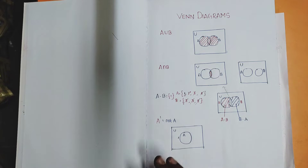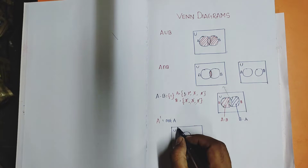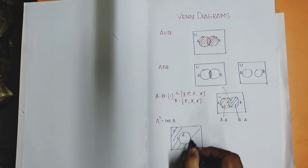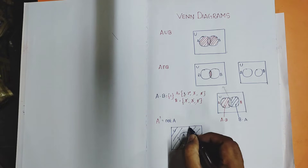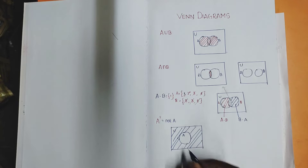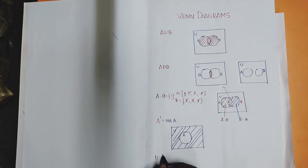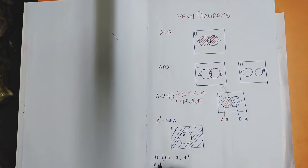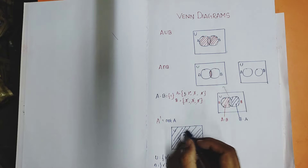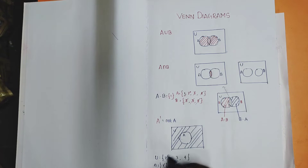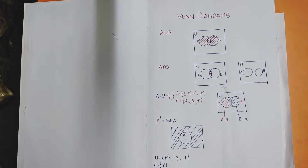So what do I shade? I shade the outside portion — not the inside one. For example, let the universal set be {1, 2, 3, 4} and A be {1}. A complement, or not A, is {2, 3, 4}. The universal set has 1, 2, 3, 4, but 1 is common to A and the universal set. The remaining elements 2, 3, 4 are outside A. That is why I shade the outside portion for A complement.